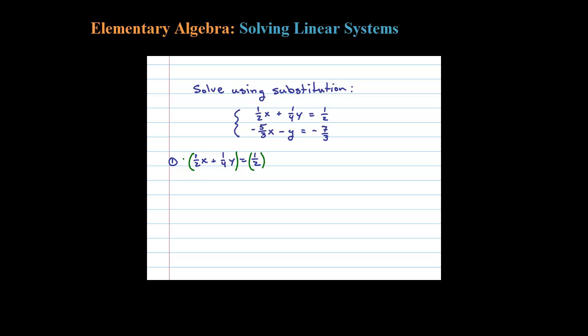I'm going to multiply both sides by 4. 4 is the LCD between 2, 4, and 2. When you do that, 4 times 1/2 is 2X, 4 times 1/4 is plus 1Y, 1/2 times 4 is 2. So when you multiply by the LCD you clear the fractions and get an equivalent equation with integer coefficients.